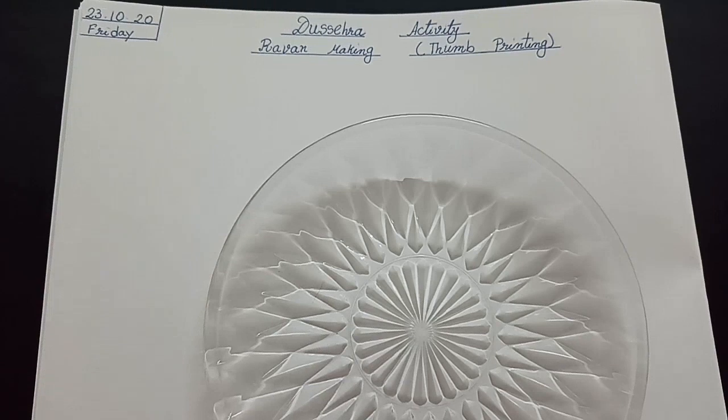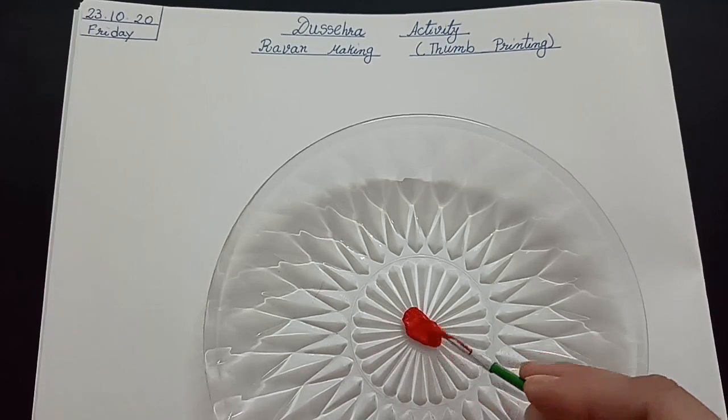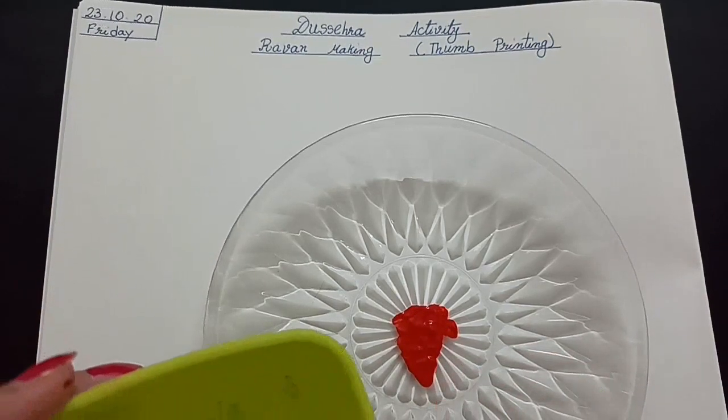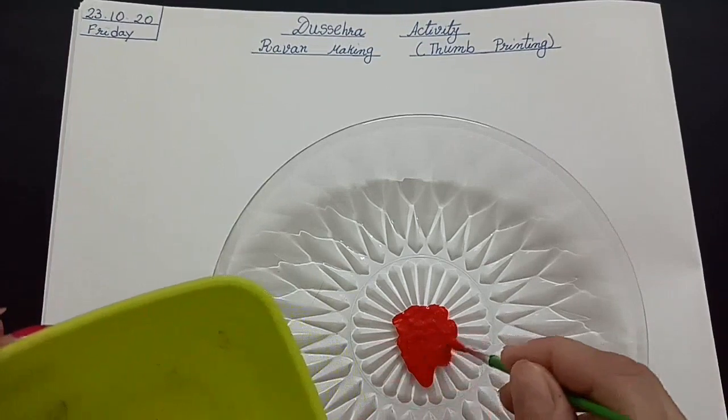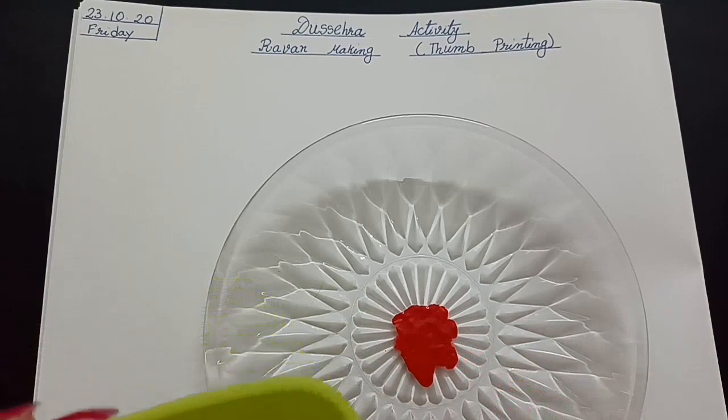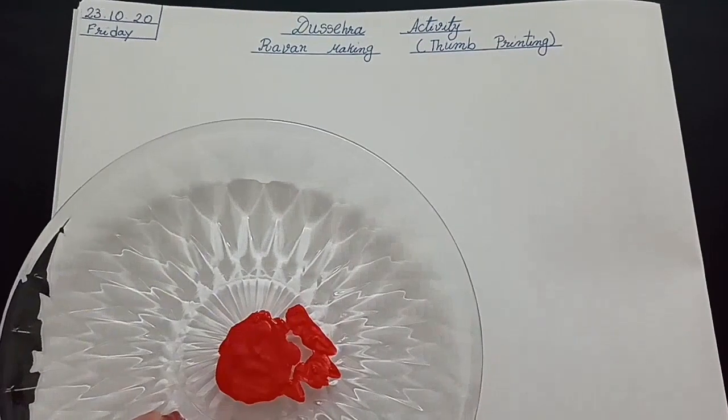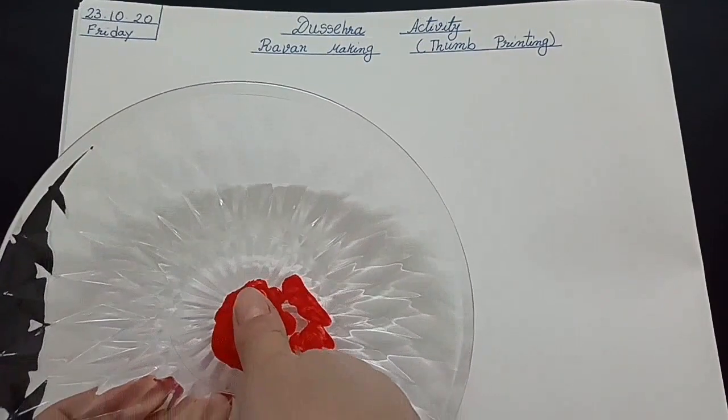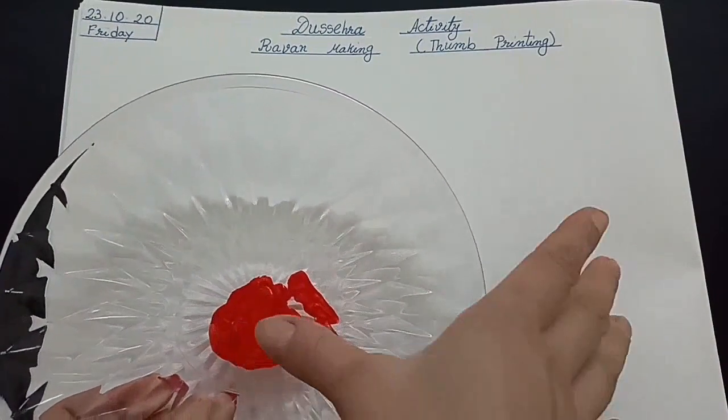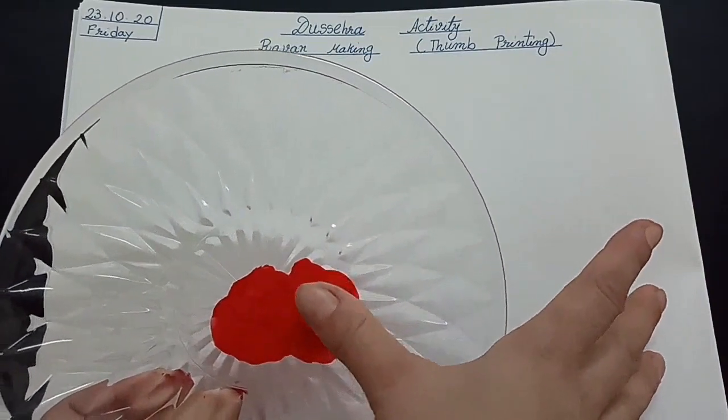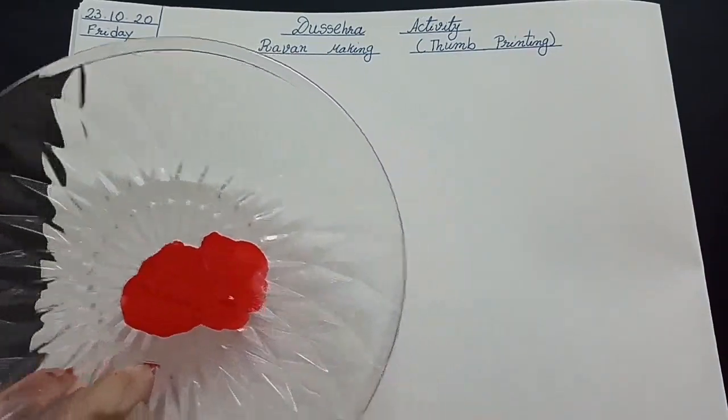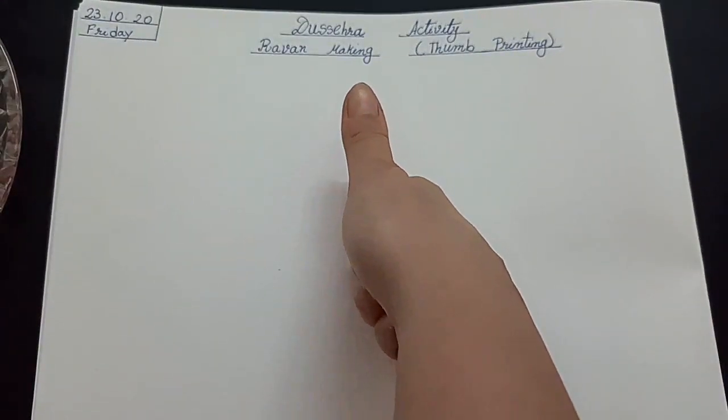First, take out some red color with the help of this brush. Mix few drops of water in this color just to dilute it. Now dip your thumb into the color and press it in the copy to make Ravan's head.